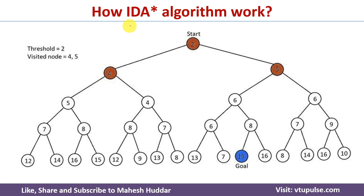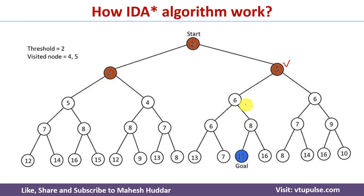Now, to understand the IDA* algorithm we will consider this graph. We have multiple nodes at each level. For each node we have written a number — that number is nothing but the heuristic cost. For example, the value 2 written on the root node is the estimated cost to reach the goal node starting from the root node. Similarly, the value 5 on another node indicates its heuristic value to reach the goal node.